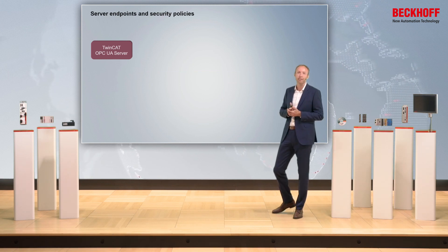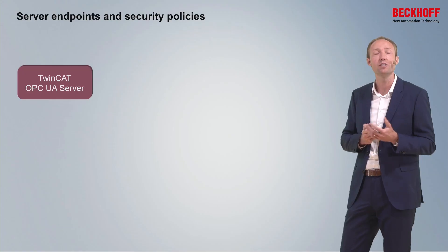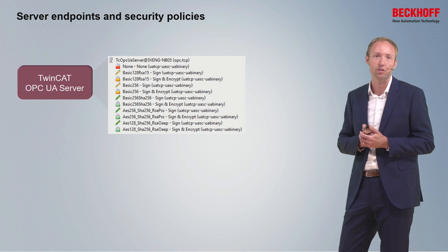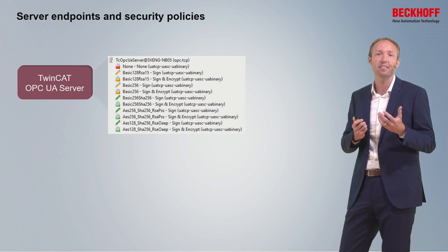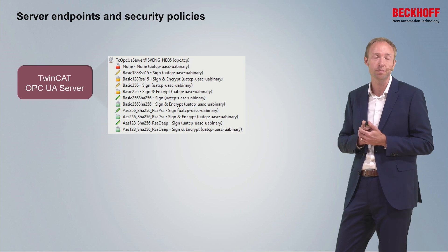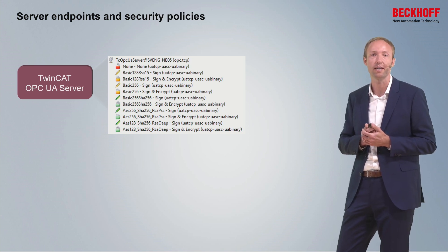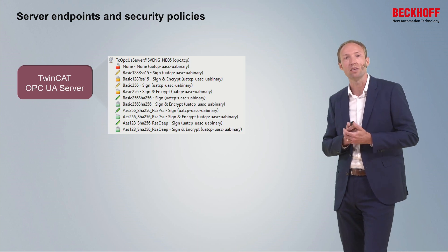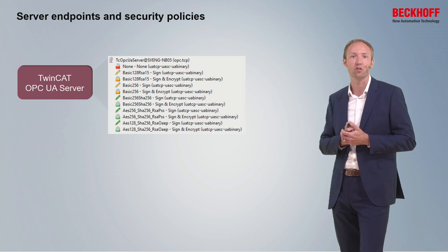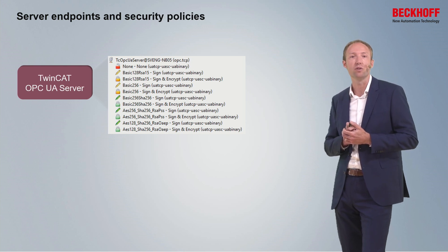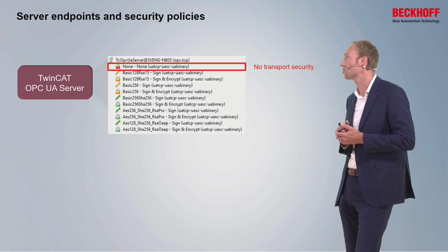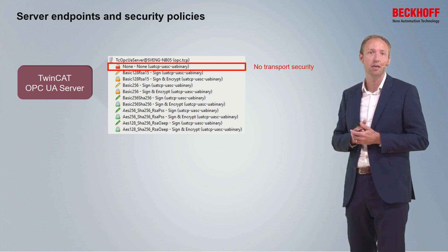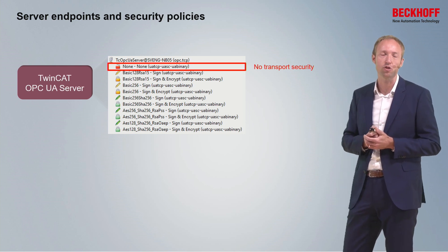Let's have a closer look at the different security mechanisms OPC UA has to offer. An OPC UA server provides different so-called endpoints to connect client applications. The endpoint specifies which security mechanisms should be used for connectivity. Depending on the installed server version and the OPC UA specification version implemented, different endpoints can be available. There is the so-called none endpoint, which offers no transport security, though additional security mechanisms may be available on the application layer.